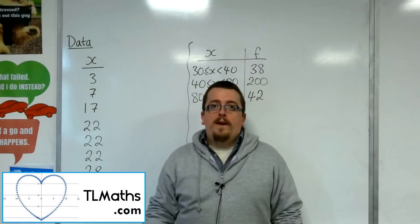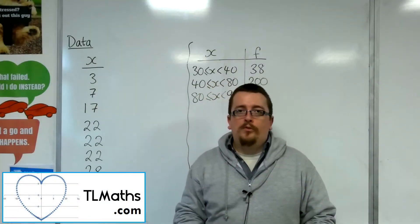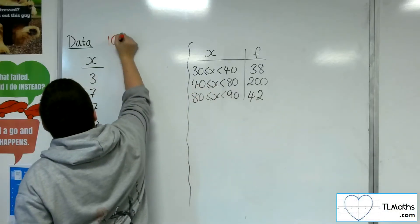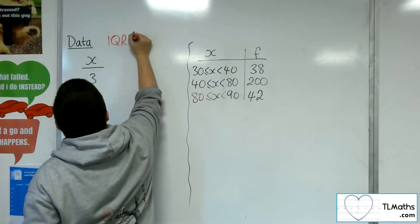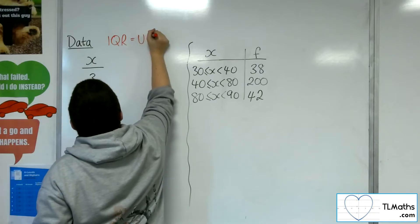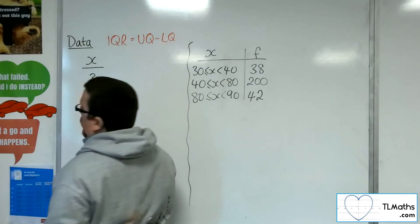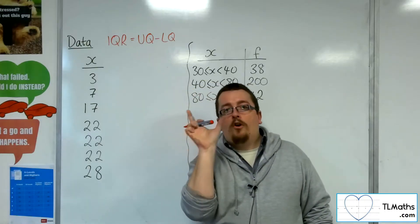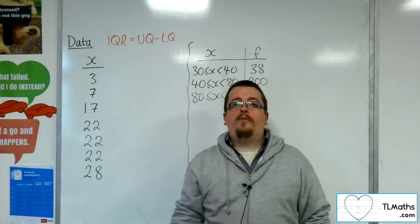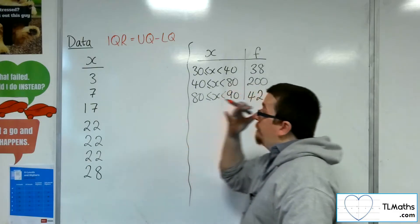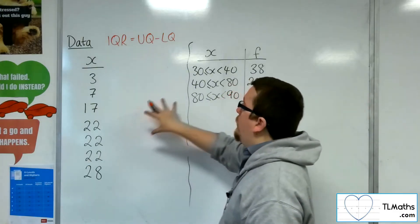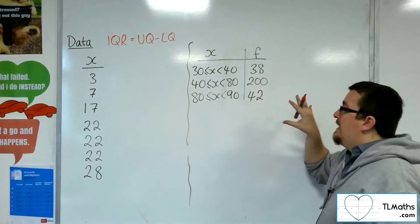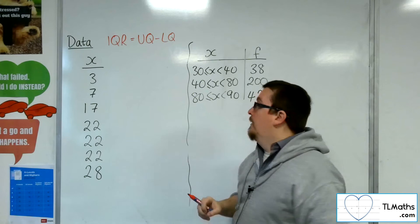So one measure of spread that we have is the interquartile range. The interquartile range, otherwise abbreviated to IQR, is found from subtracting the lower quartile from the upper quartile. And that gives you the range of the middle 50% of the data. So I'm going to work out the interquartile range for a discrete set of data here on the first example and then a grouped continuous set of data on the right.